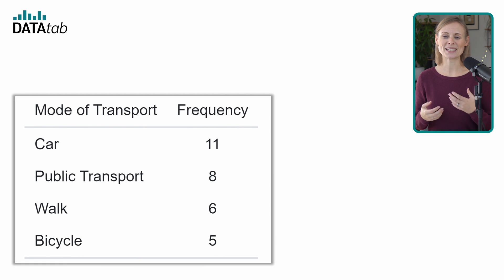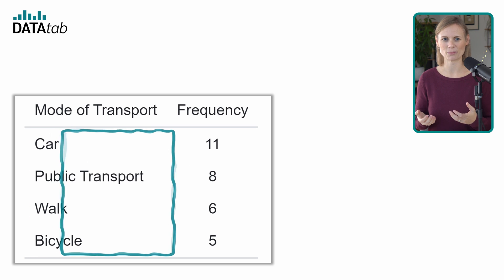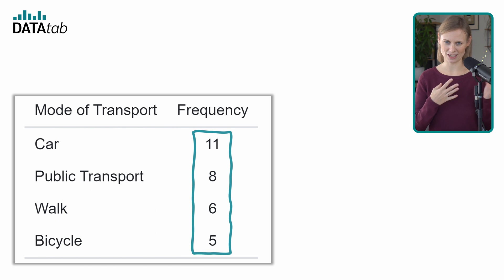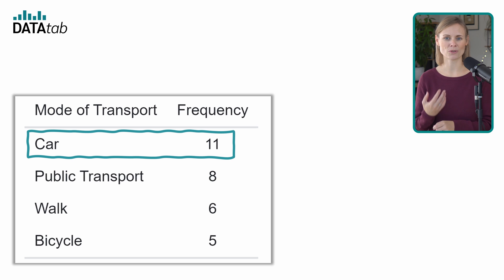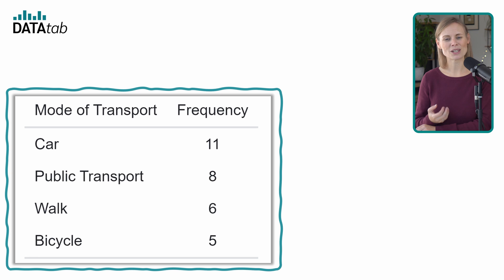We can create a frequency table to summarize this data. To do this, we simply enter the four possible answer options in the first column and then count how often car, bicycle, walk, and public transport occurred. From the table, it's evident that the most common mode of transport among the employees is by car, with 11 employees preferring it. The least common is bicycle, with 5 employees using it. This frequency table provides a clear and concise summary of the data, making it easier to understand the transportation preferences of the company's employees.